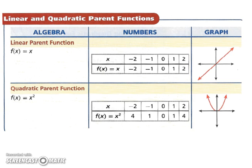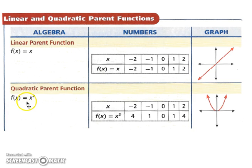Let's start with some parent functions. The parent function for a linear equation would be f of x equals x, so your input value will match your output value. For the quadratic parent function, f of x equals x squared, meaning your input value will match the output value squared. So if you have negative 2 squared, it's going to give you 4. Negative 1 squared will be 1, and so on.